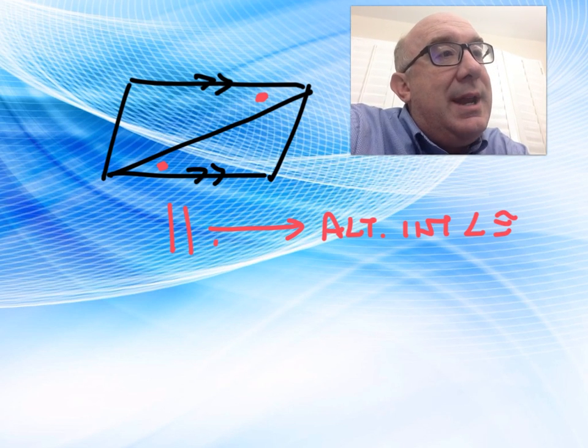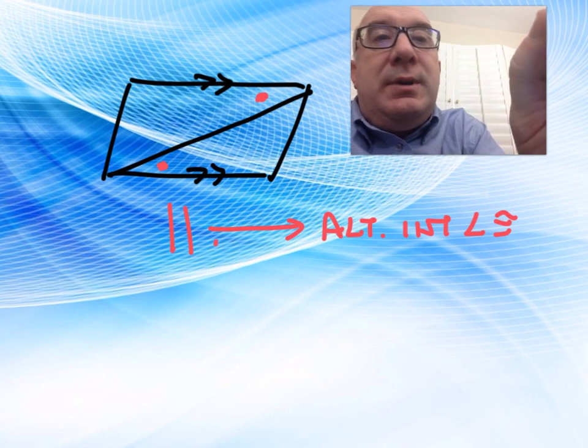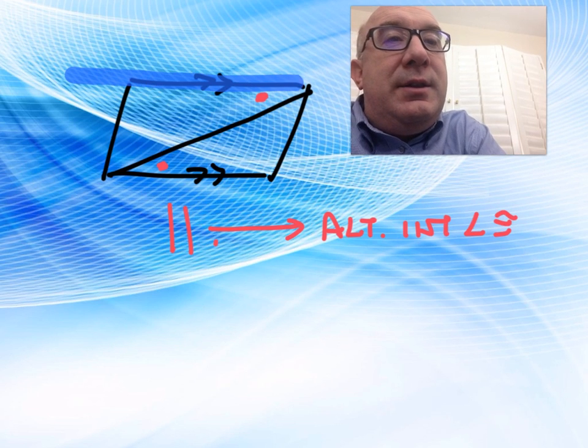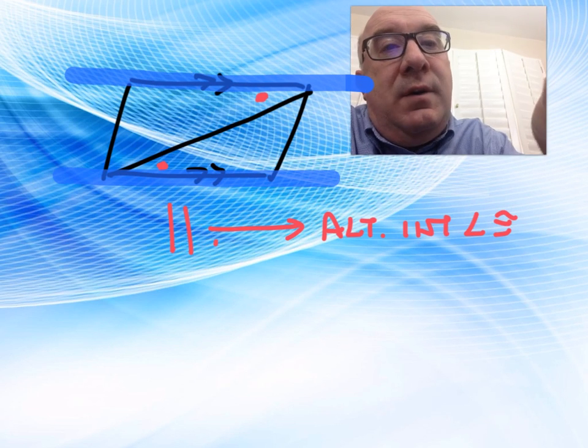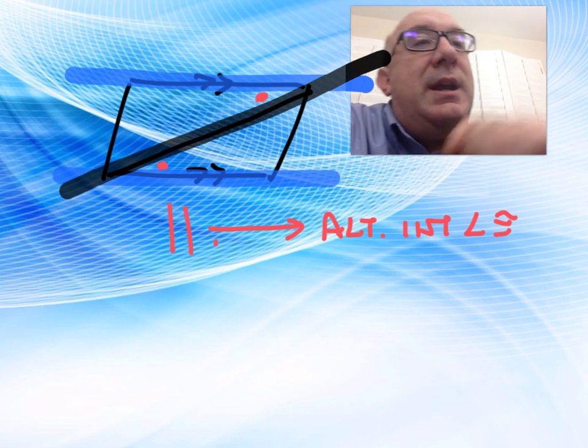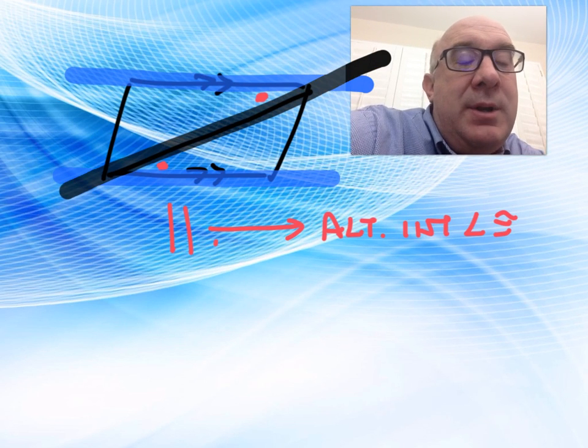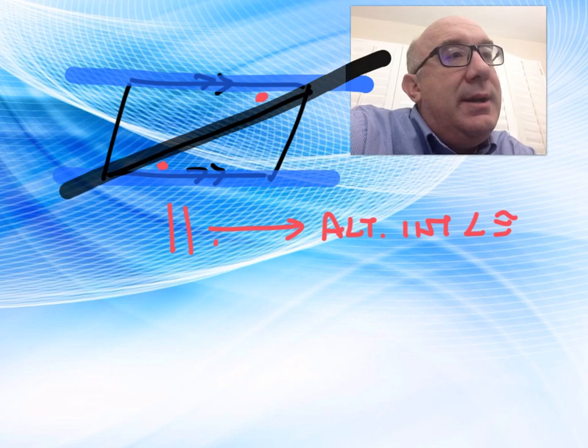Sometimes students can't see these relationships. So again, a little highlighter along those parallel lines often can take the old diagram out and put in one that's a little more recognizable.